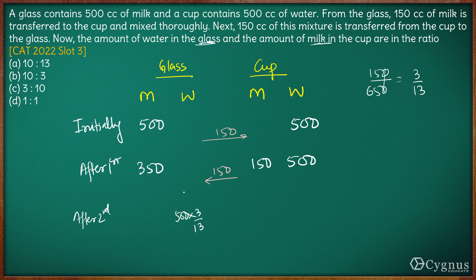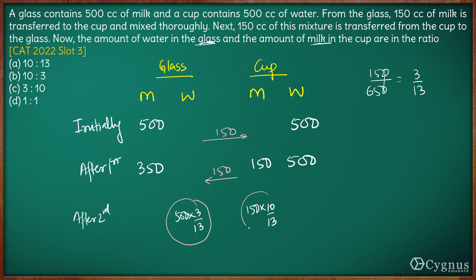The amount of water transferred from the cup to the glass will be 500 × (3/13). And the amount of milk remaining in the cup: since 3/13 is transferred out, 10/13 of milk will be remaining in the cup. So 10/13 of 150 cc remains in the cup. Now if you see the ratio of water in the glass to milk in the cup: water in glass = 1500/13, milk in cup = 1500/13 as well. So the ratio comes out to be 1 is to 1.